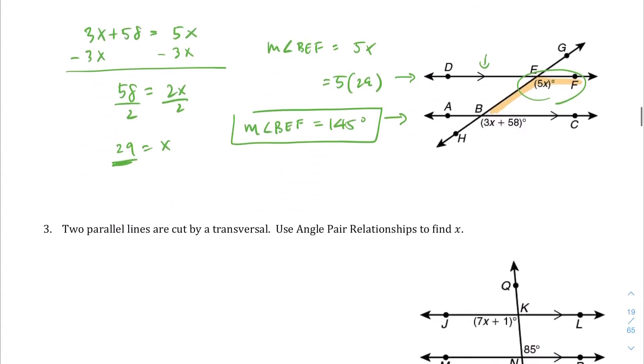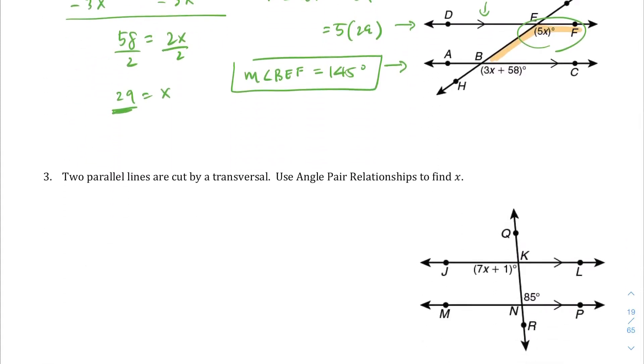Question number 3. Two parallel lines are cut by transversal Q. We want to find x and looky here, we have alternate interior angles. What you should know by now is that alternate interior angles are congruent. So we just have to set up an equality statement here. We're going to say 7x plus 1 equals 85. I got those right here. Alternate interior angles are congruent, therefore I'm going to write that they are equal to each other.